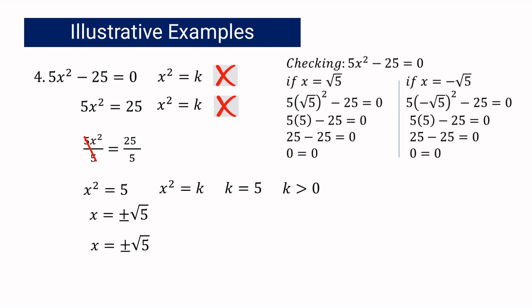Let us check. Substituting into the original equation 5x squared minus 25: if x equals square root of 5, then square root of 5 squared equals 5, and 5 times 5 is 25. So 25 minus 25 equals 0. In the same manner, if x equals negative square root of 5, then negative square root of 5 times negative square root of 5 is also 5, and 5 times 5 is 25. So 25 minus 25 equals 0. Both solutions positive and negative square root of 5 are correct.